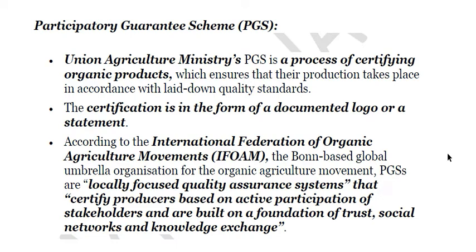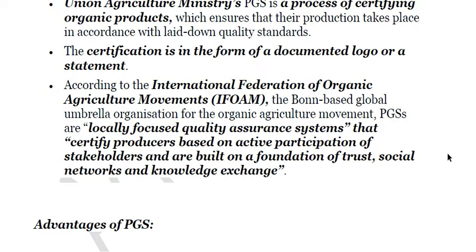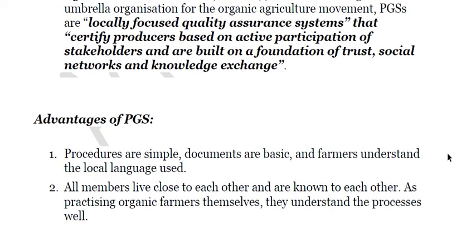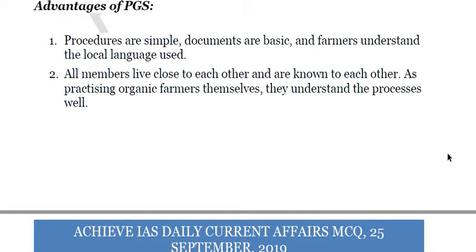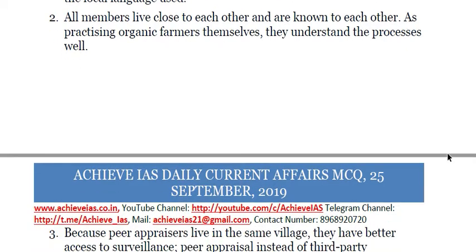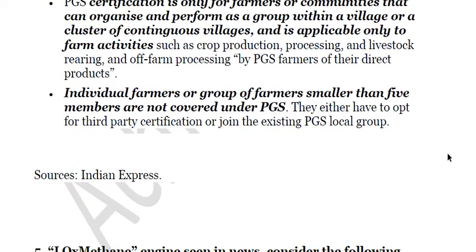A product must meet minimum quality standards before it can be considered organic. Products meeting those standards are certified as organic, and certification is in the form of a documented logo or statement. According to the International Federation of Organic Agricultural Movements, PGS schemes are locally focused quality assurance systems that certify producers based on active participation of stakeholders and are built on a foundation of trust, social networks, and knowledge exchange. Procedures are simple, documents are basic, and farmers understand the local language used.